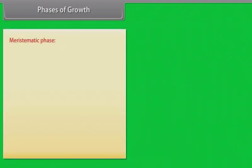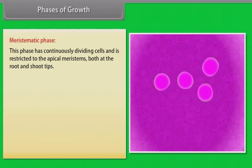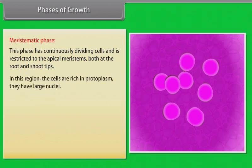Meristematic phase. This phase has continuously dividing cells and is restricted to the apical meristems, both at the root and shoot tips. In this region, the cells are rich in protoplasm. They have large nuclei.